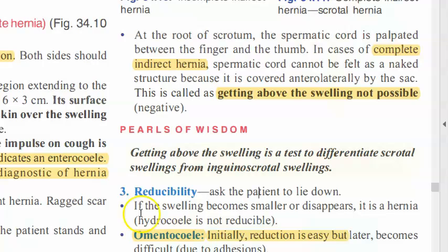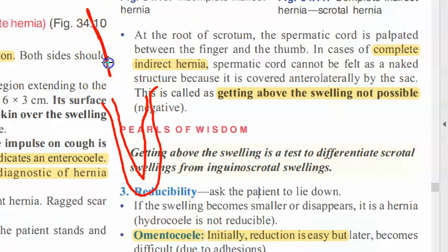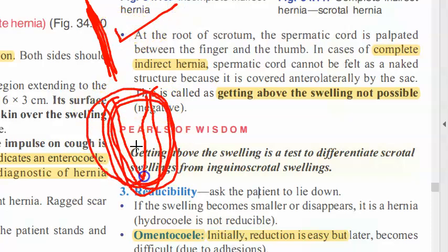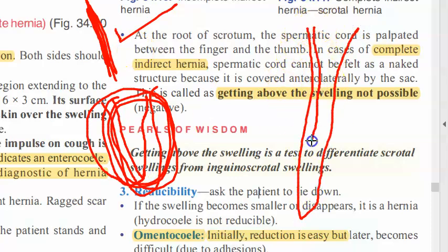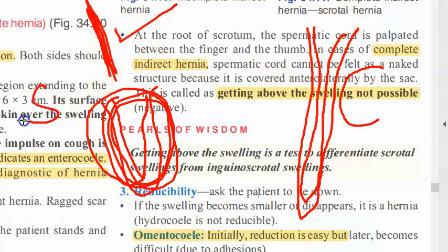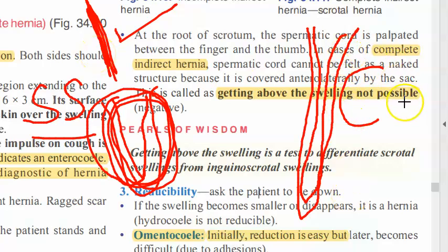Getting above the swelling is a test to differentiate scrotal swelling from inguino-scrotal swelling. If it is only a scrotal swelling, you can get above it and feel the spermatic cord. However, if it is a complete indirect hernia, you cannot get above the swelling. So: only scrotal swelling — you can get above it; complete indirect hernia — you cannot get above the swelling.